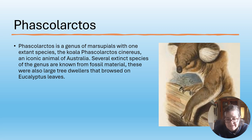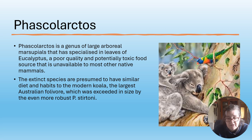Phascolarctos is a genus of marsupials with one extant living species - the koala, Phascolarctos cinereus - an icon of Australia. Several distinct species of the genus are known from fossil material. These are also large tree dwellers that browse on eucalyptus leaves, as does the modern koala. The genus is largely arboreal, specialised in the eating of eucalyptus - a poor quality and potentially toxic food source unavailable to most other native mammals.